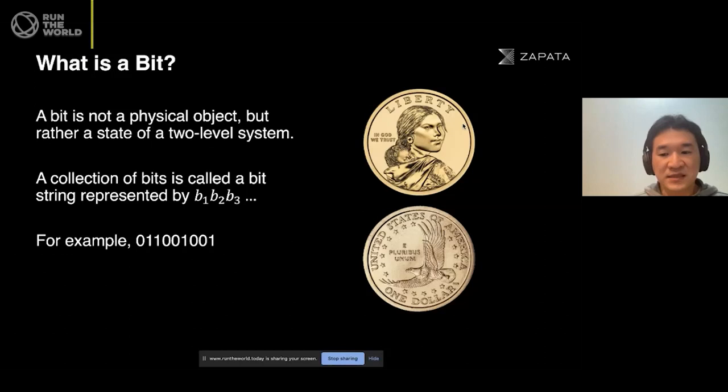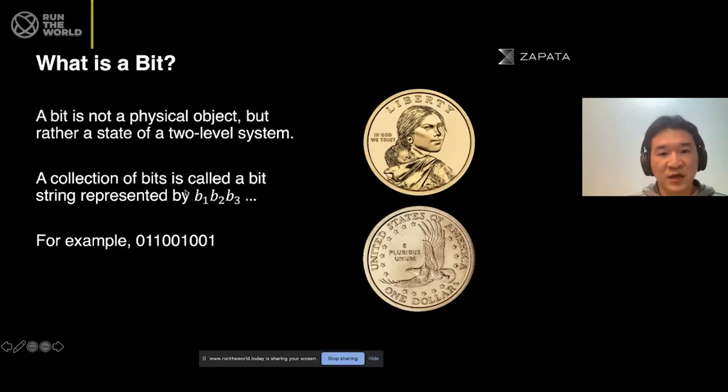Diving into a little bit of detail: what is a bit? This is something that we use every day with transistors. A bit is actually not a physical object, but rather a state of a two-level system — I mentioned the analogy of a coin flip. A collection of bits is called a bit string, represented by B1, B2, B3, and so on.